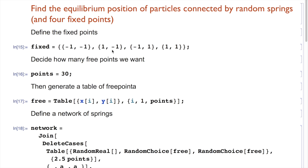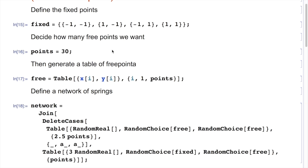Then I need to decide how many free points I want to connect my springs to. In this case I choose 30. I think it would be quite interesting to try out a few things just to see what happens. So essentially one of the questions I'll ask you is to see what happens if the number of points changes.